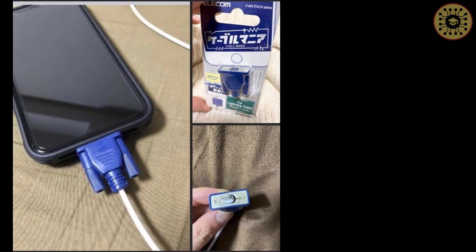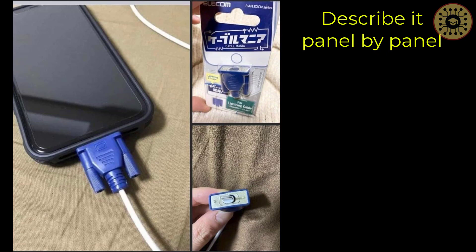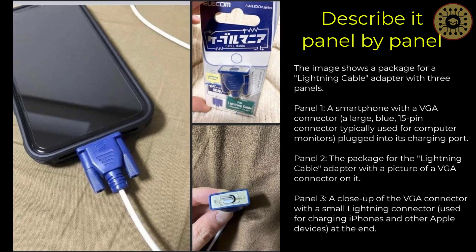For example, when you give a picture to the model and say 'describe the picture panel by panel,' the model understands what is in the image and explains it to you. GPT-4 says it's a 3-panel lightning cable adapter package, and the model describes the objects in each panel one by one. Awesome.